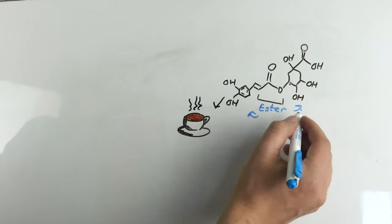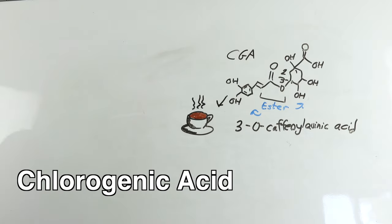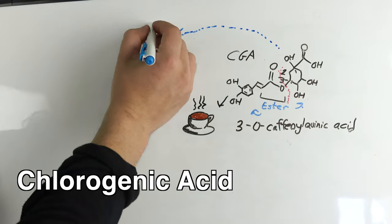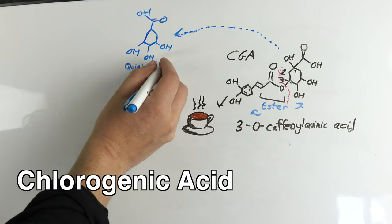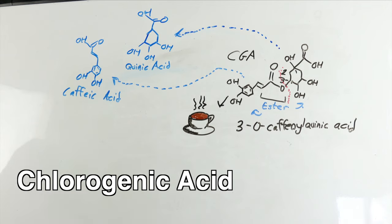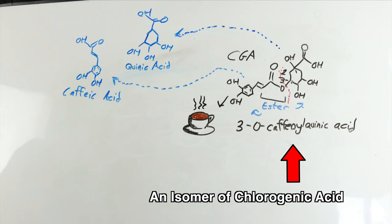The most abundant and important acid in coffee is probably chlorogenic acid, or CGA. It is an ester, meaning two compounds combined between a carbon double-bonded to an oxygen and another oxygen — in this case, quinic and caffeic acid. This particular configuration, also called an isomer, of chlorogenic acid is called 3-O-caffeoylquinic acid, meaning the caffeic acid is attached to the third carbon of the quinic acid ring. This is the most prevalent isomer of CGA, although other isomers are also present in lower concentrations.